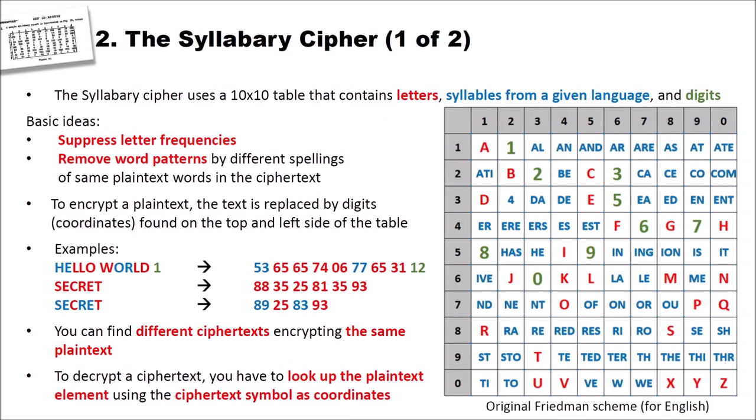What is the syllabary cipher? The syllabary cipher uses a 10 by 10 table that contains letters that are marked here in red, syllables from a given language (in our case it's English), and digits which I colored green. The basic ideas of that kind of cipher are to suppress letter frequencies and to remove word patterns by different spellings of same plaintext words in the ciphertext. These two properties that we want to avoid using the cipher can be used to attack substitution ciphers.